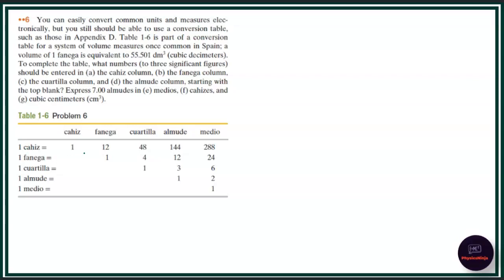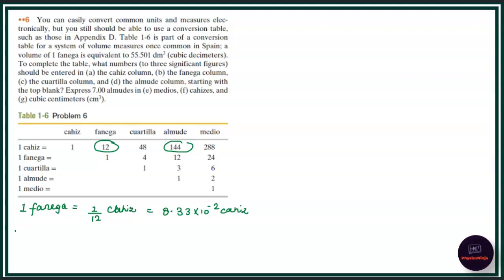So as given, 1 chiase equals 144 almede, and 1 chiase equals 12 fenugula. From here we can directly conclude that 1 fenugula equals 1/12 of a chiase, which equals 8.33 × 10⁻² chiase. And similarly, 1 quartilla equals 1/48 chiase, which equals 2.08 × 10⁻² chiase.